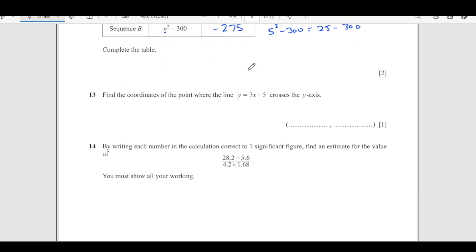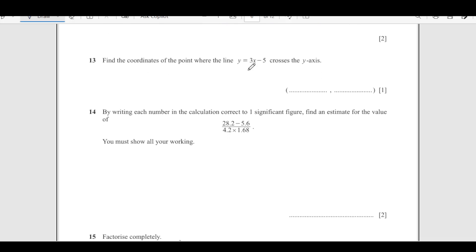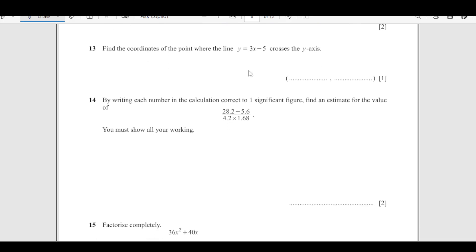Number 13: find the coordinates of the point where line y equals 3x minus 5 crosses at y axis. When line crosses at y axis that means x is 0. When x is 0, y is going to be 3 into 0 minus 5, so y is negative 5. Answer is 0 and negative 5.